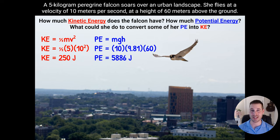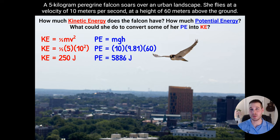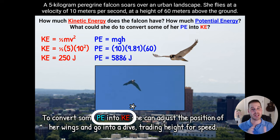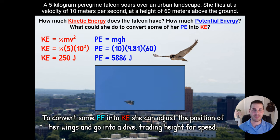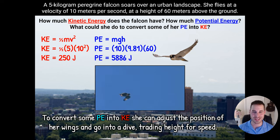Those two numbers are very different. This falcon doesn't have nearly as much motion energy as she does stored energy — a lot more potential energy right now. The final part of the question: what could the falcon do to convert some potential energy into kinetic energy? The answer is adjust her wings — to convert potential into kinetic energy you have to start falling down. Falcons do this by changing wing position to aerodynamically dive downward very quickly.